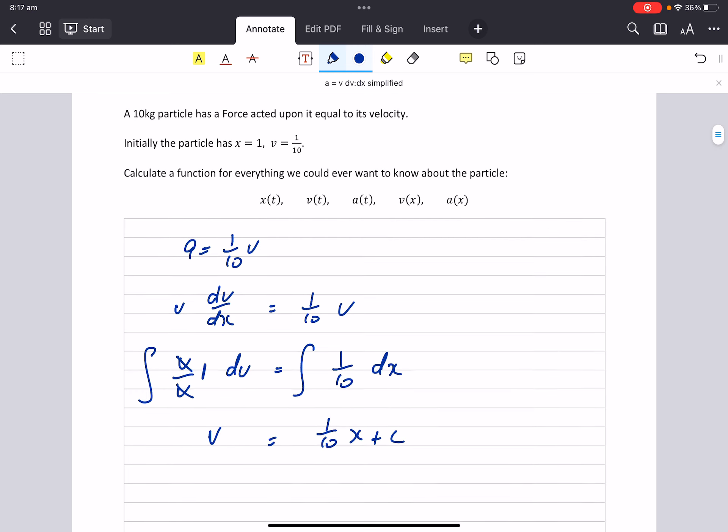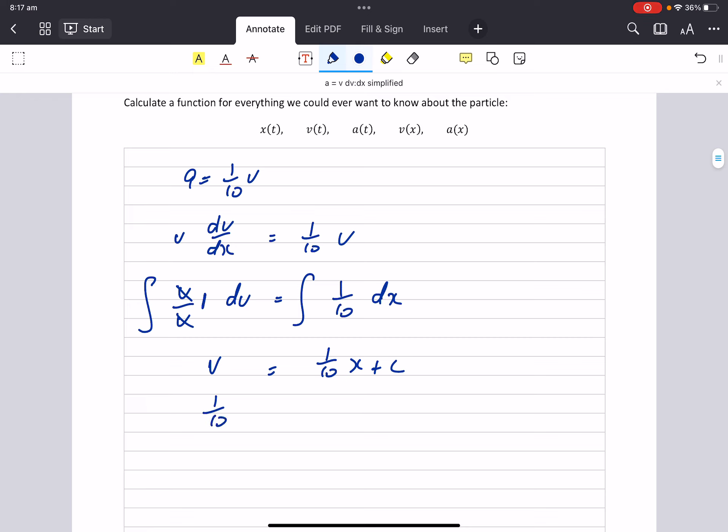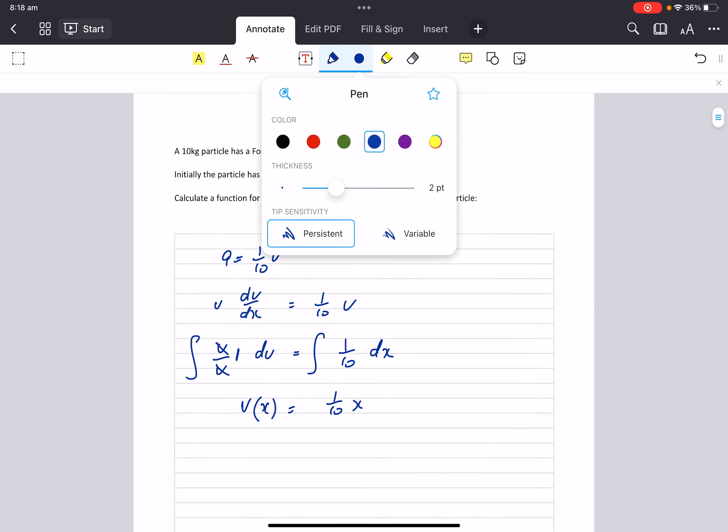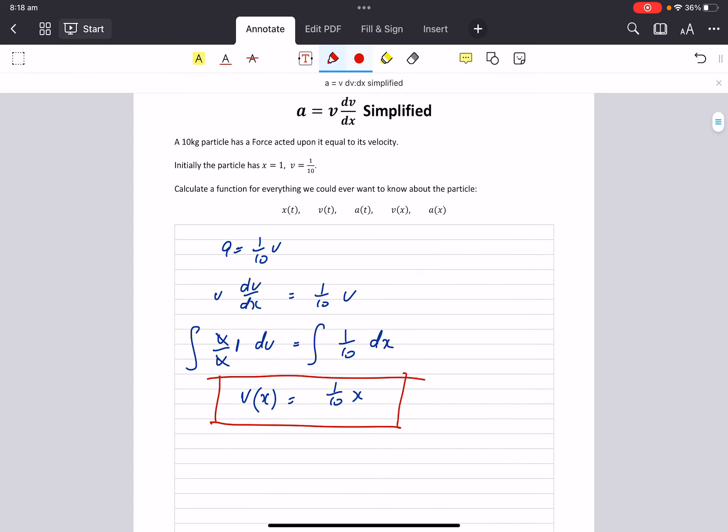We are told that when the displacement is 1 the velocity is one tenth. Therefore c equals 0. Clearly c is not always 0, you've got to check it out and do it. But I've made this one nice and simple. So I've got v as a function of x. That is one of the functions we might need to know to find a relationship between velocity and displacement.